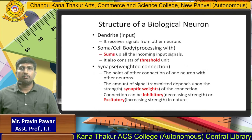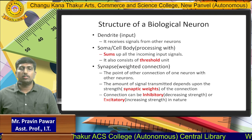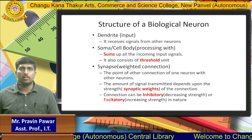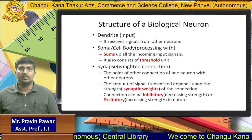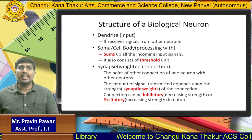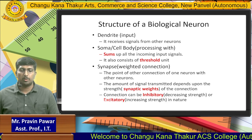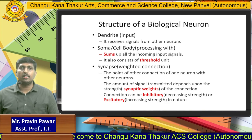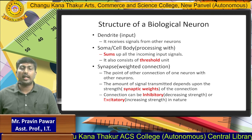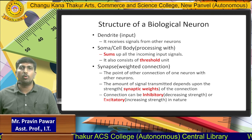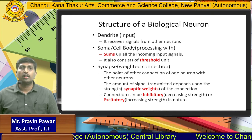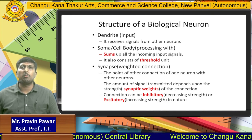We will now define the different parts of the biological neuron structure. The first part is the dendrites, which in soft computing we can call the input part of the machine. It receives signals from other neurons. For example, attaching a mic, keyboard, or mouse to a computer provides input into that particular structure.